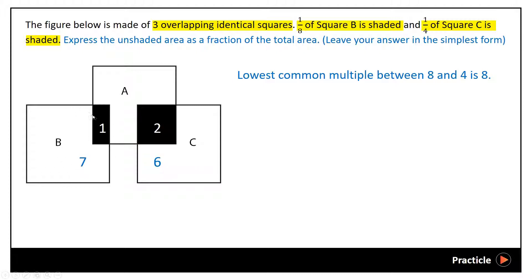Since we know that each square is made up of 8 parts, square A must also be made up of 8 parts. And from there, since we know that 3 parts out of 8 parts of square A is shaded, the number of parts in square A that are unshaded would be 8 minus 1 minus 2, which is 5.